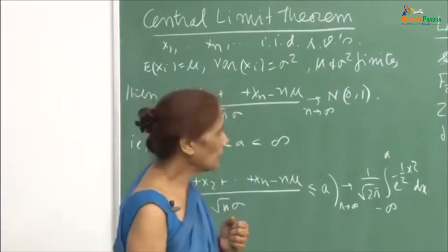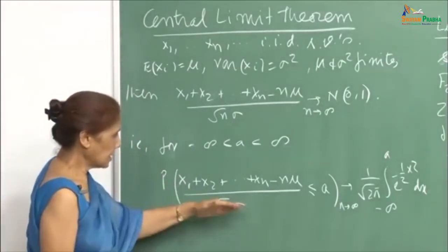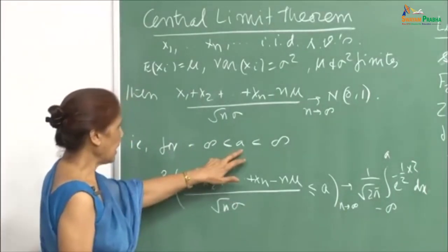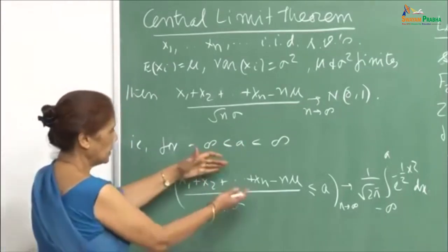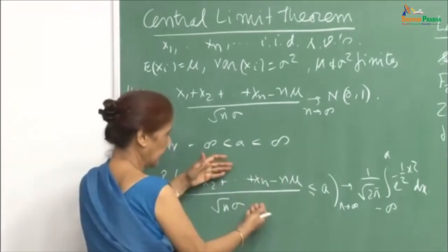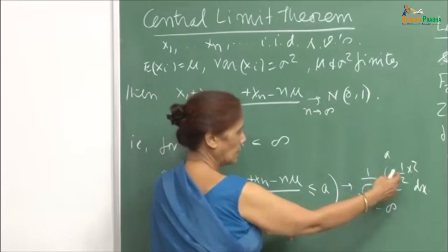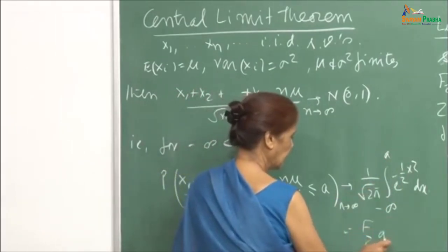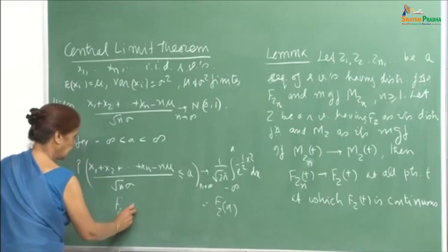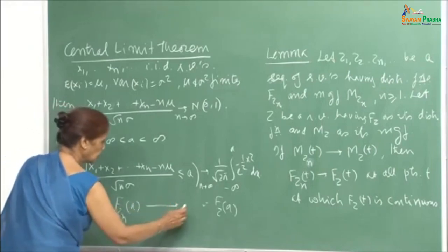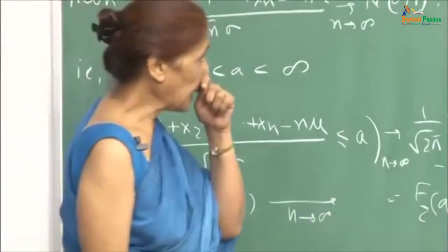This is convergence in distribution. In other words, for any a from minus infinity to infinity, the probability of this random variable being less than or equal to a will converge to the standard normal. That means F_{Z_n}(a) converges to F_Z(a) as n goes to infinity — convergence in distribution.